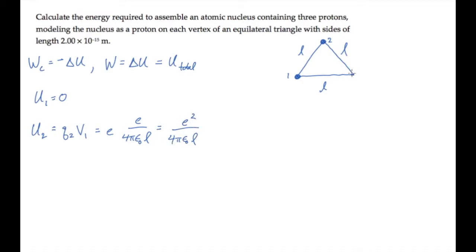Bringing the third charge in requires an energy equal to that third charge times the potential due to the first, plus the third charge times the potential of the second. And that gives us twice the result that we found in the line above.